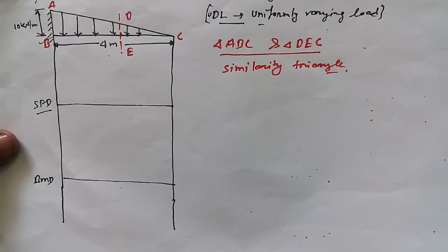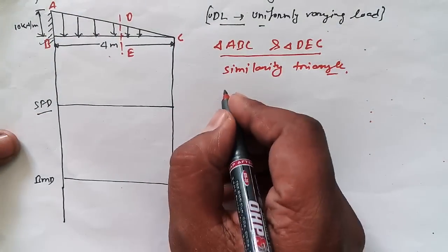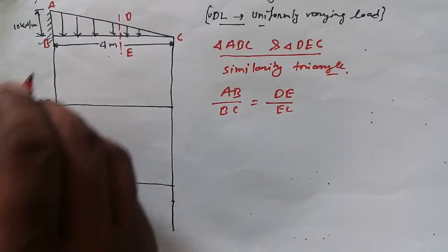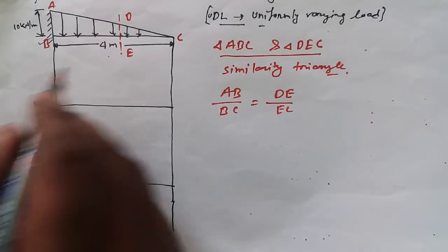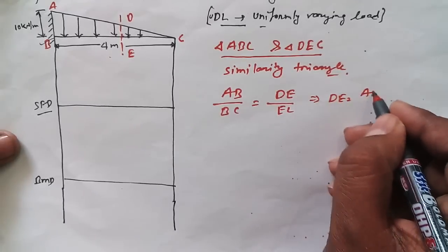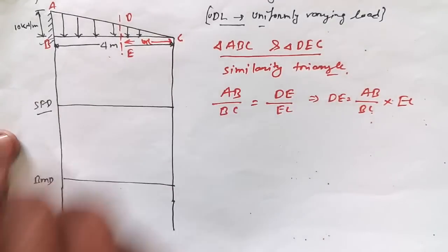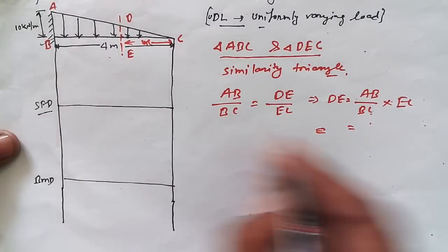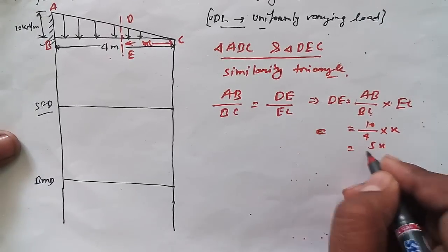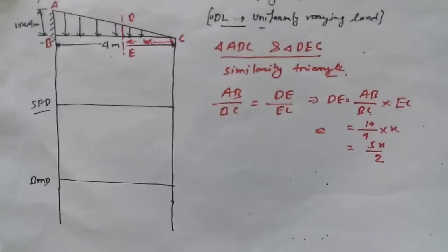I hope you know about similarity of triangles. According to this, we can write an equation: AB upon BC is equal to DE upon EC. Our main goal is to find out DE from this equation. So we can write: DE = (AB / BC) × EC. Suppose EC is X, so the value for DE works out to 5X upon 2.